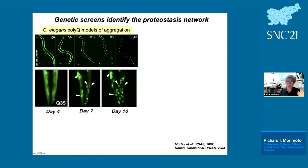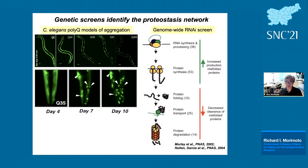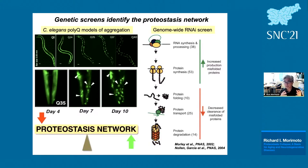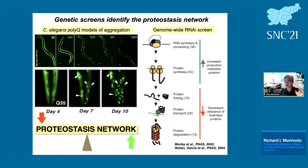Q35 animals that start soluble on day four of adulthood can be followed every three days, watching aggregates appear in real time. This became the basis of a genetic screen that led to the discovery of the proteostasis network. Surprisingly, the proteostasis network is not just chaperones and the proteasome — it starts with RNA synthesis and processing. We identified 38 genes involved in transcription and splicing that directly affect protein aggregation, many ribosome subunits and translation factors, then chaperones, proteins involved in transport, and proteins involved in degradation.